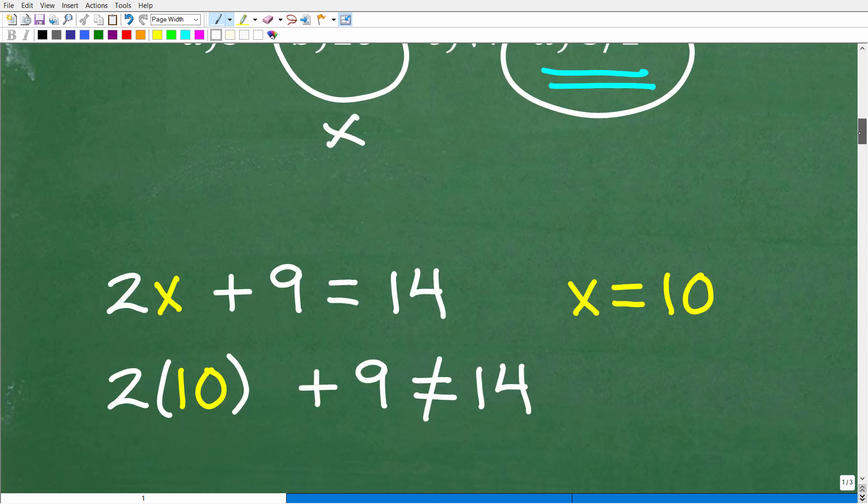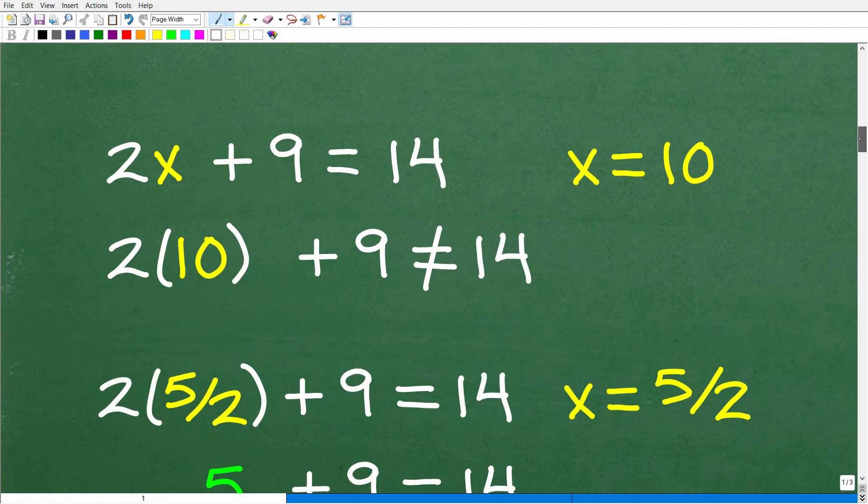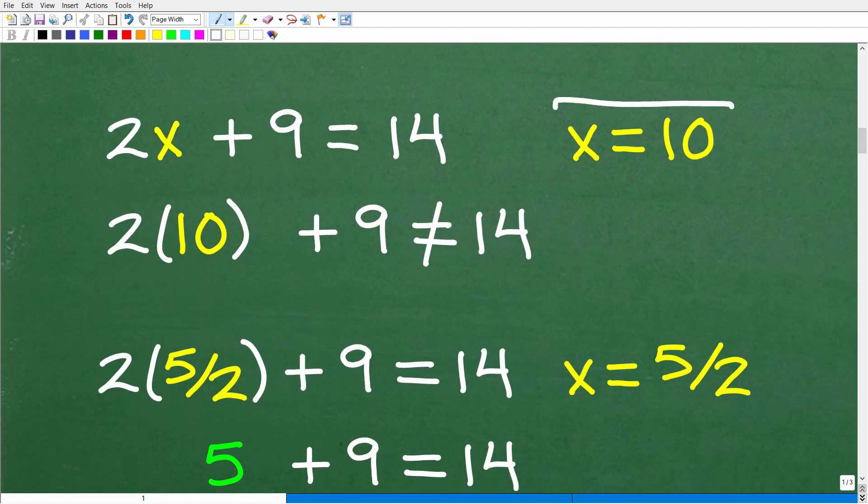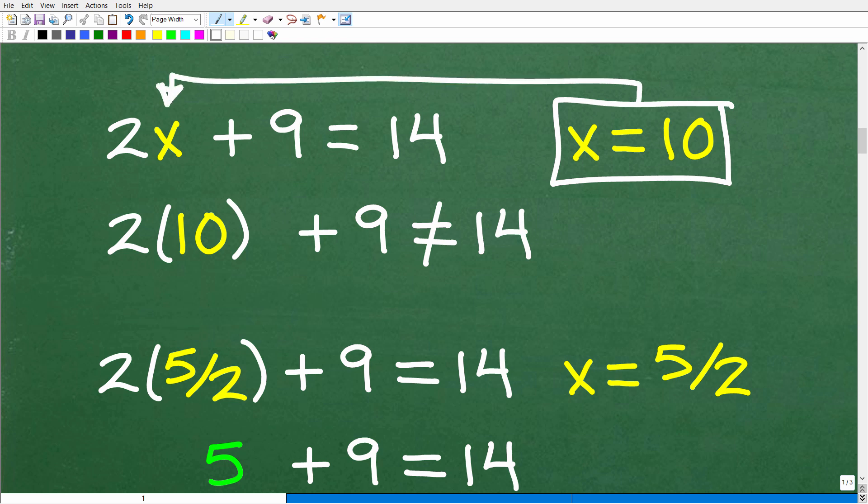Alright, so here is how you check a solution to an algebra equation. So, again, if x is equal to 10, that means that when we replace this x with a 10, the left-hand side will be equal to the right-hand side. Alright, so this means we have 2 times 10. Of course, that's 20. 20 plus 9 is 29. 29 is not equal to 14. Therefore, x cannot be equal to 10. Alright, so that is not the solution because it doesn't balance the equation.